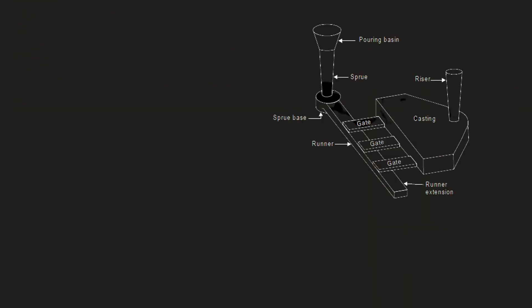In this figure, we can see the part called sprue. It is situated beneath the pouring basin and above the sprue base, which leads to the runner. So, the sprue is located beneath the pouring basin and above the sprue base and runner.